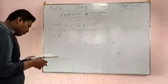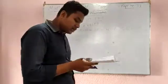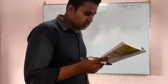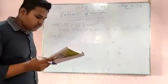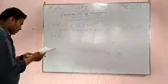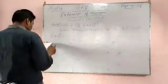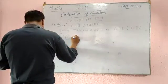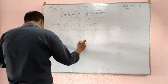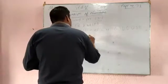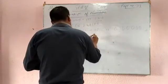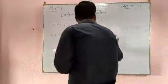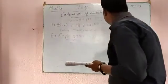Now example number 5: write the following number in expanded form and find the place value of the digit 5 in each case. The first number is 3,28,98,452. You need to write it in expanded form.